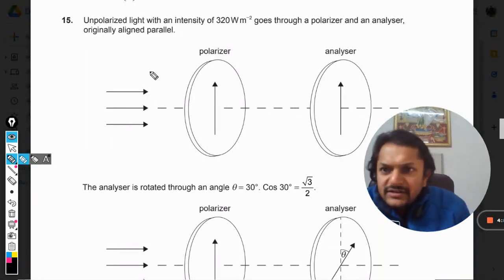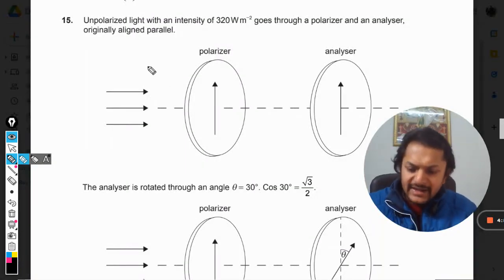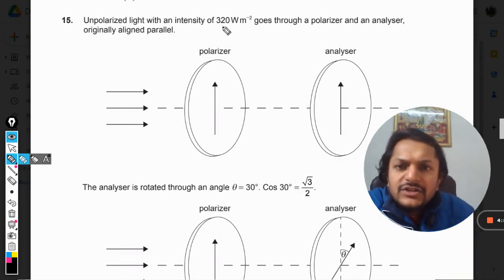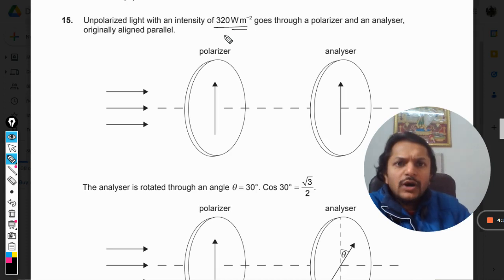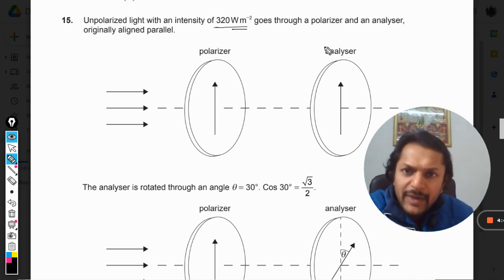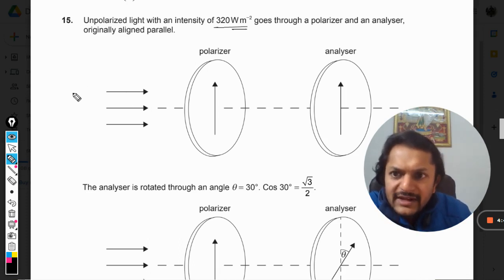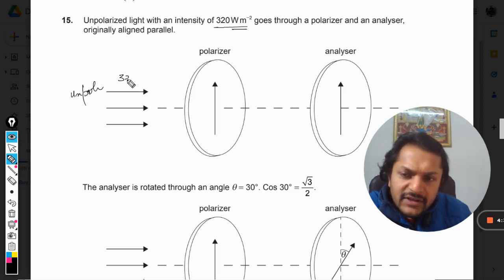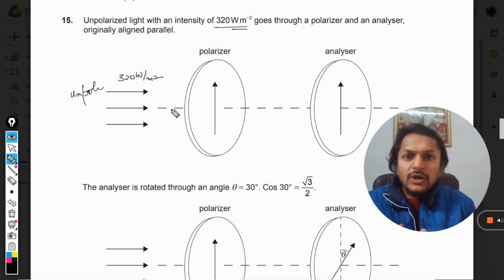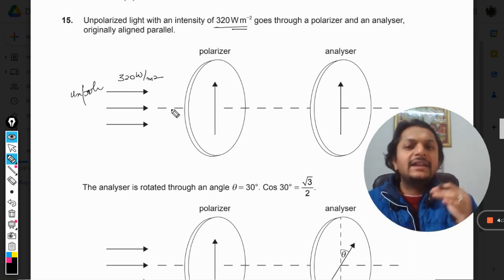Okay dear students, let us see what is there in this question. Unpolarized light with an intensity of 320 watts per meter square goes through a polarizer and an analyzer originally aligned parallel. So this is unpolarized light and this light is having the intensity 320 watts per meter square, and now it passes through the polarizer and then through the analyzer.